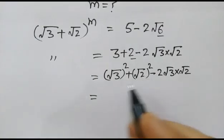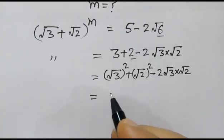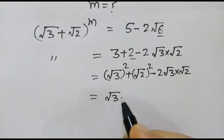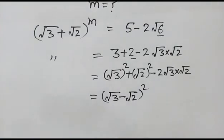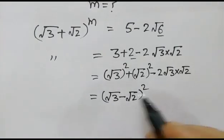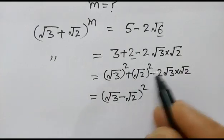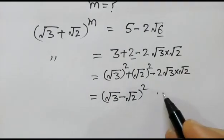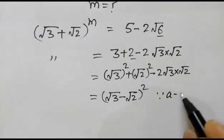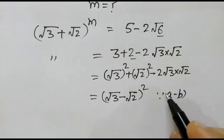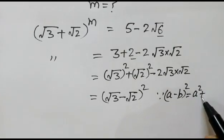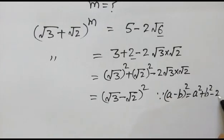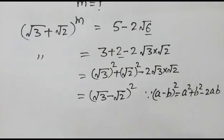Now, this is the expression of square root of 3 minus square root of 2, whole squared. If we expand this, we get this, because a minus b whole squared is equal to a squared plus b squared minus 2ab.